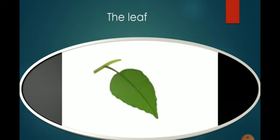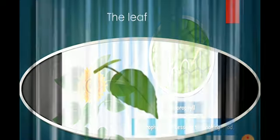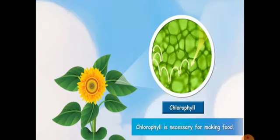Now starting with the first topic, why are leaves green? Leaves are green because they contain a green substance or pigment called chlorophyll. This green pigment helps the plants to prepare food.